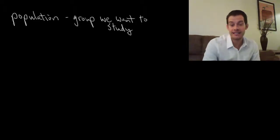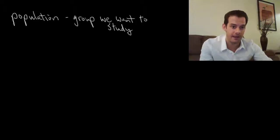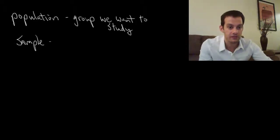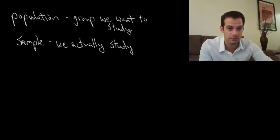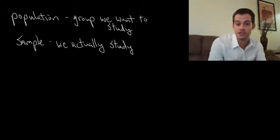So we can't study the population. Instead we have to choose some people from that population that we actually study, and those people are called the sample. The sample are the people that we actually study. If I want to know about college students, any college student is part of the population, but the college students that I actually bring into the lab and study would be my sample.